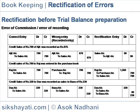Credit sales of Rs.320 to Das was recorded as sales to Basu of Rs.230. The rectification entry would be recorded as follows.